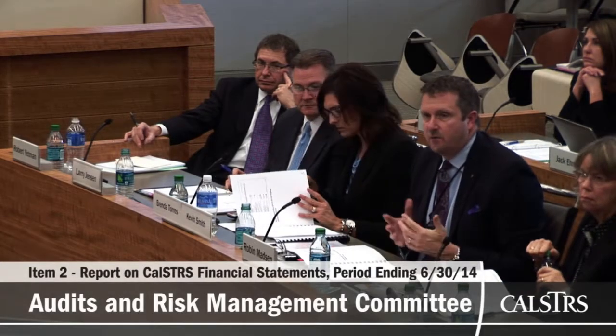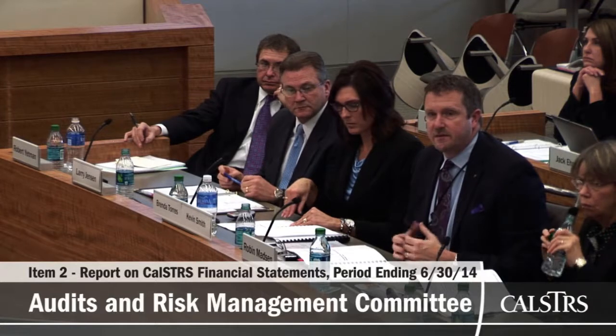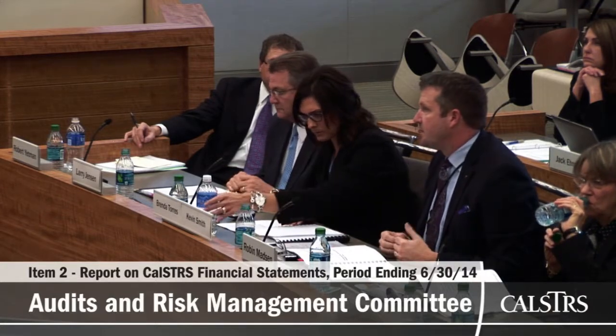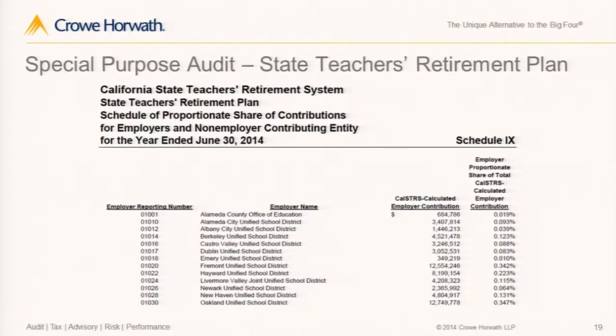There's going to be a new auditing chapter on what the employer auditors should do within the state and local audit guide. The current white paper specifically says that the employer auditors — the people auditing the school districts — including Alameda County Office of Education's auditors as well as their management, are responsible for understanding and auditing that $684,786 figure. It does not absolve them of all responsibility relating to their own financial statements, for both management and the employers' auditors.